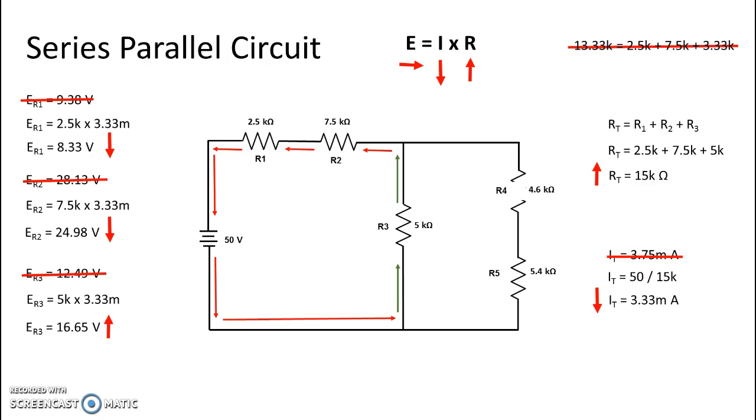If I were to put my black lead at the bottom of R5 and my red lead at the top of R5, I would read zero, because there's no difference of potential there. As there's no current flow, there's no difference of potential, and you're reading all on one side of your battery, just like we've discussed in previous circuits.